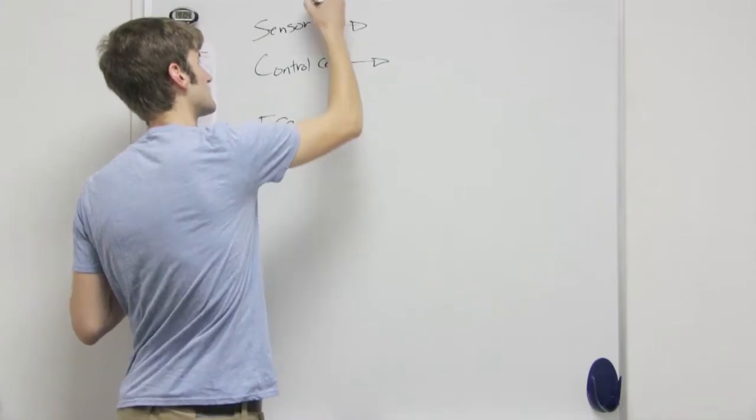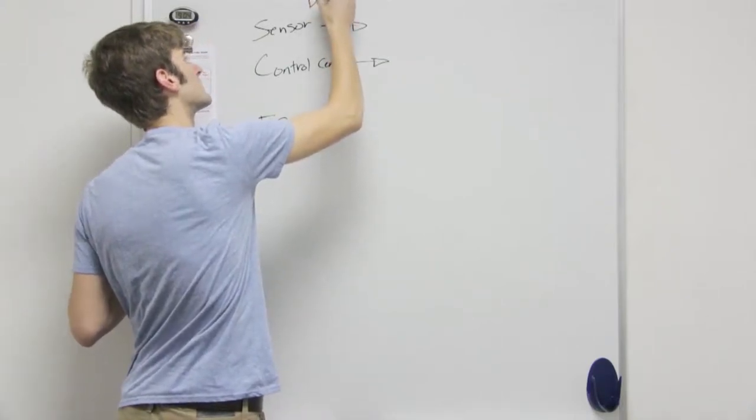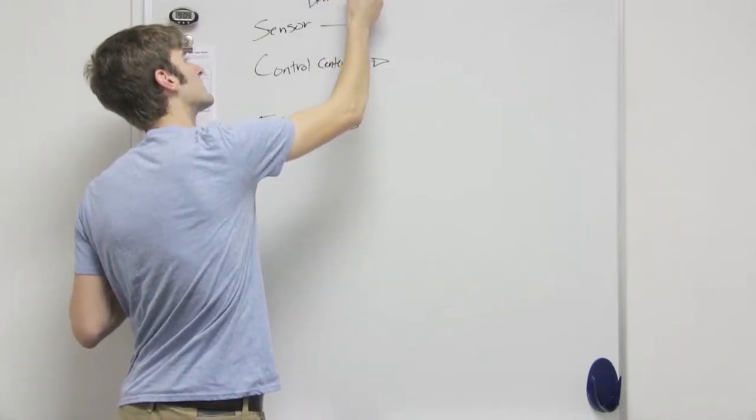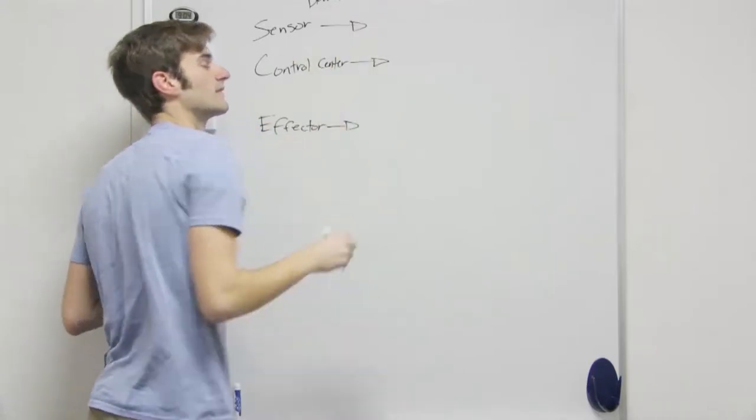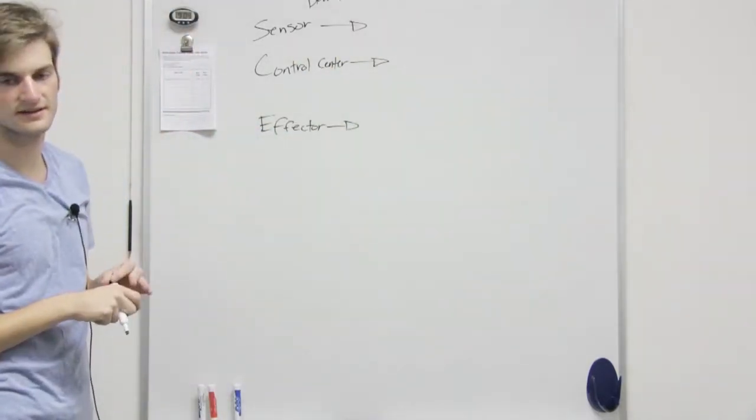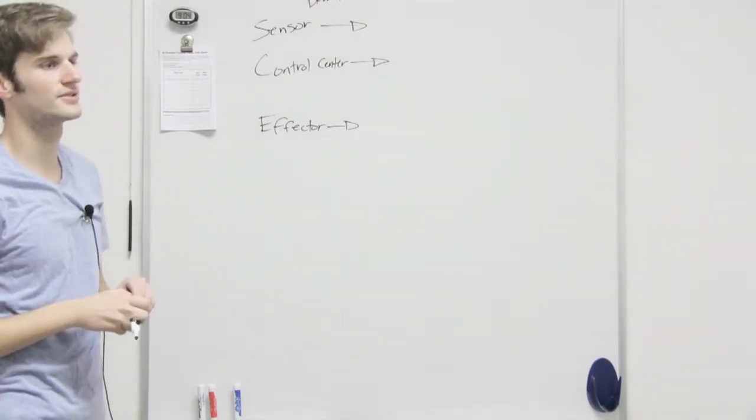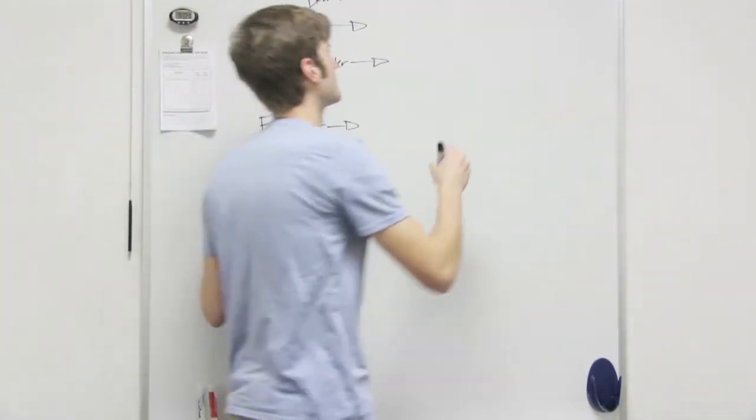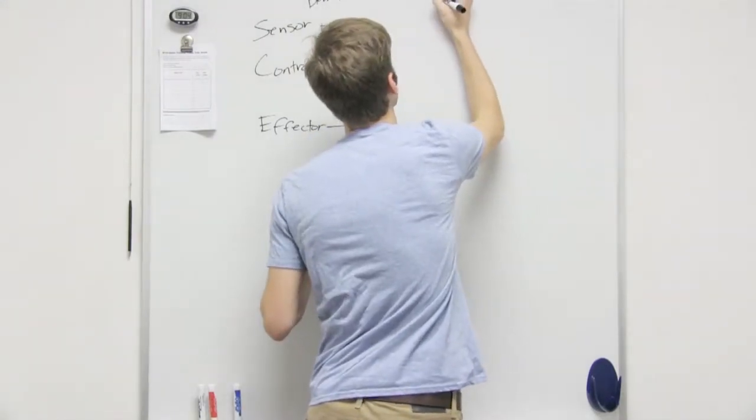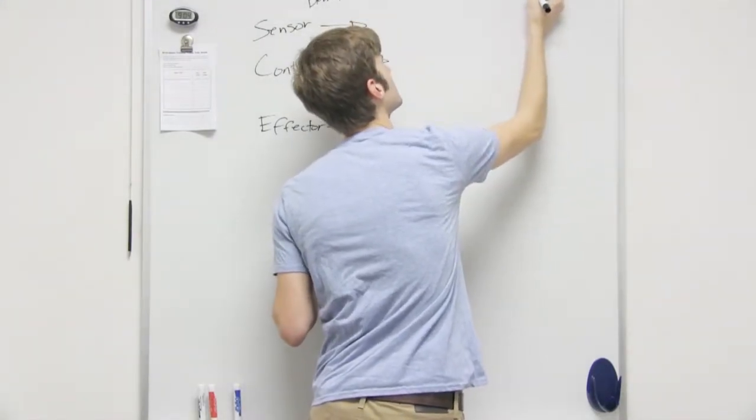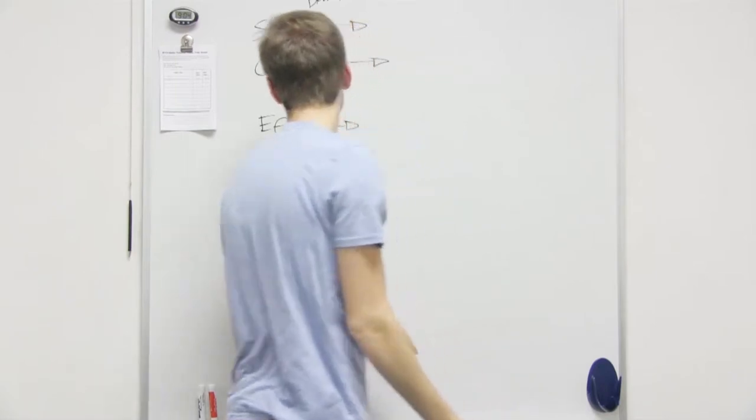This is blood pressure. So we can do low and high as well. So let's say you have low blood pressure and high blood pressure. Are the vessels the sensor?